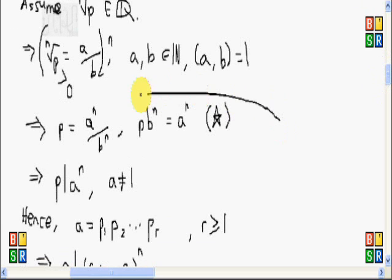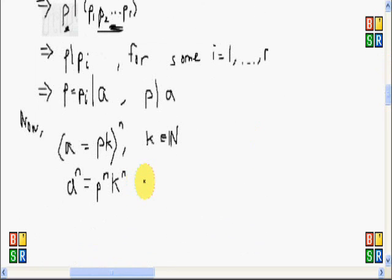But from star, here, from star, a to the n is equal also to p times b to the n. So this one is also equal to p times b to the n. Let's consider this. We'll divide both sides by p.